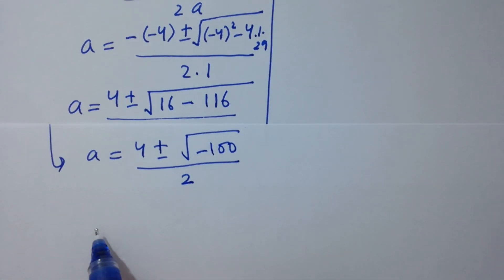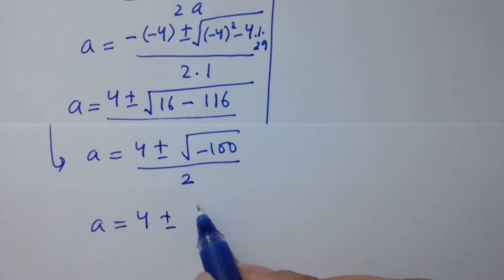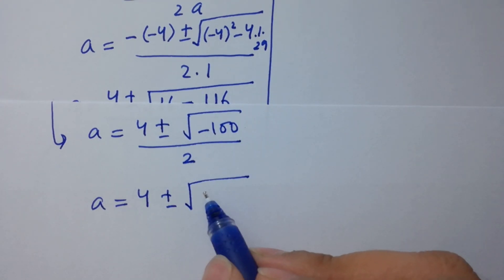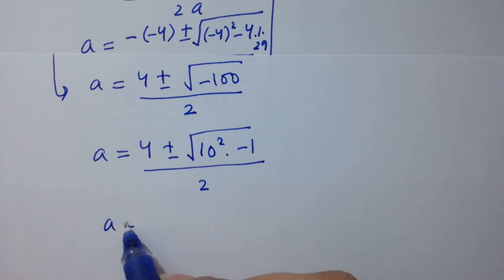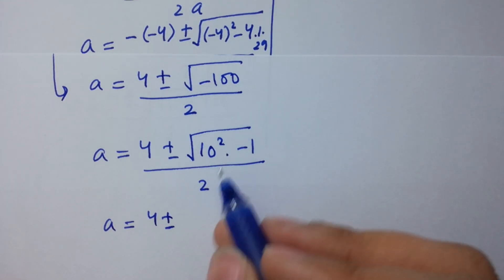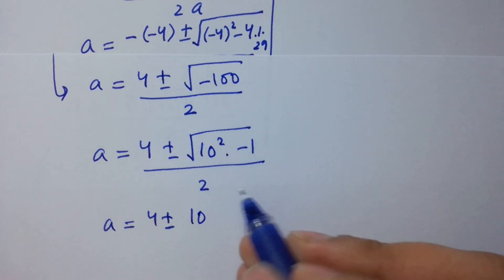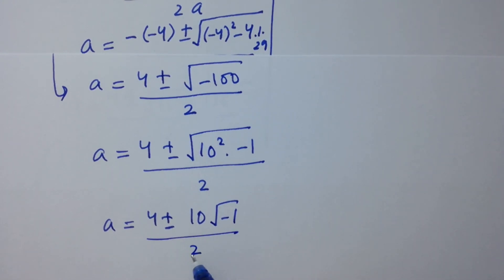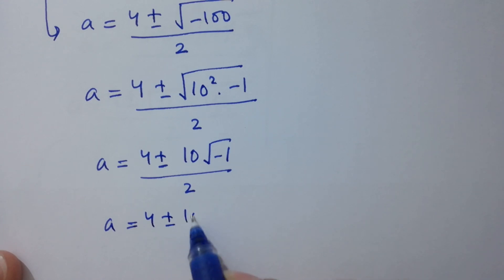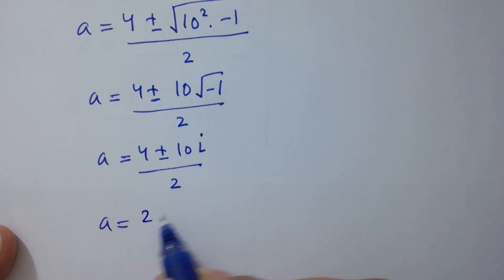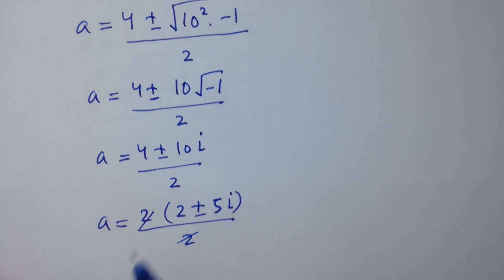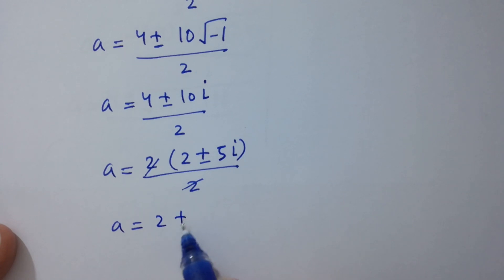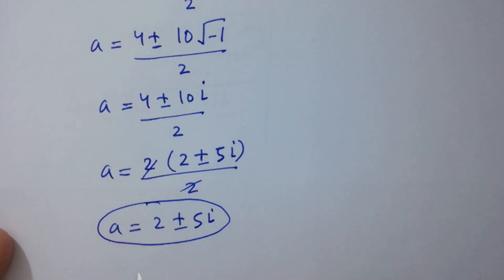So a equals 4 plus or minus square root of minus 100, over 2. Now 100 is 10 squared, and square root of minus 1 is i from complex numbers. So a equals 4 plus or minus 10i, over 2. Factoring out 2: 2 times 2 plus or minus 2 times 5i, over 2. The 2s cancel, giving a equals 2 plus or minus 5i — two complex solutions.